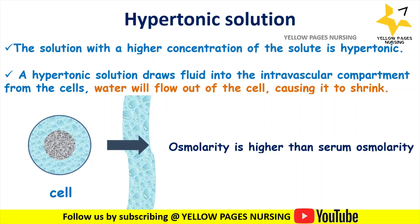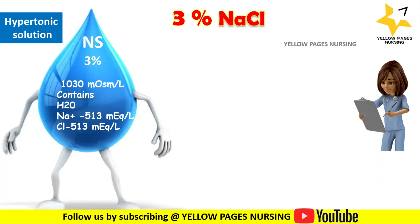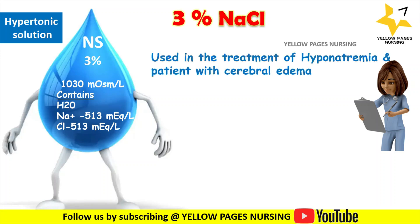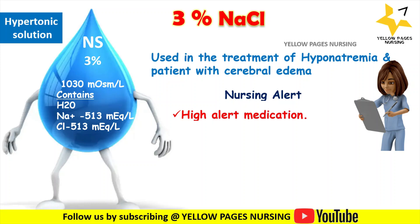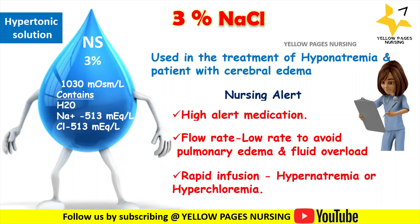The first example of a hypertonic solution is 3% Sodium Chloride, with an osmolarity of 1030 milli-osmol per liter, containing sodium 513 mEq/L and chloride 513 mEq/L. It is used in acute treatment of severe hyponatremia and cerebral edema. It is categorized as a high-alert or high-risk medication and must be used accurately to avoid pulmonary edema and fluid volume overload. Rapid infusion may cause hypernatremia or hyperchloremia.